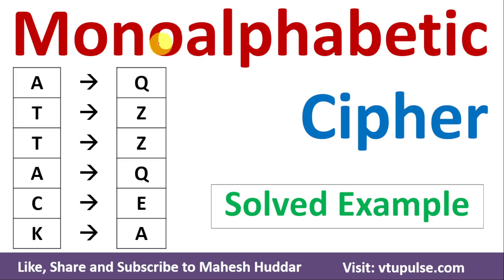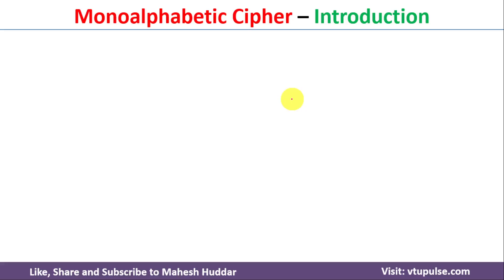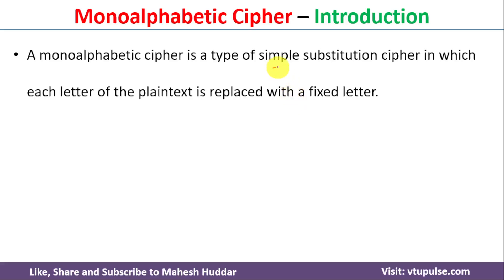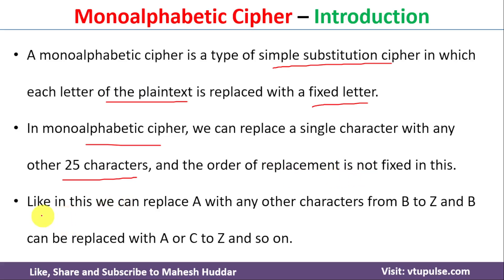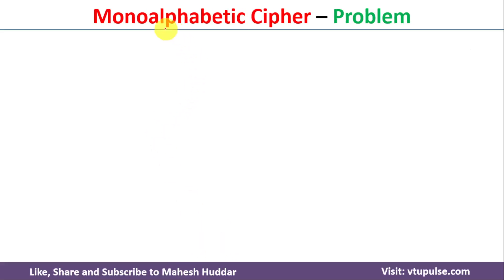Welcome back. In this video I will discuss the concept of monoalphabetic cipher with a simple example. It is a type of simple substitution cipher in which each letter of the plain text is replaced with a fixed letter. In monoalphabetic cipher, a single character can be replaced with any of the other 25 characters and the order of replacement is not fixed — for example, 'A' can be replaced with any character from B to Z, and 'B' can be replaced with A or C to Z.